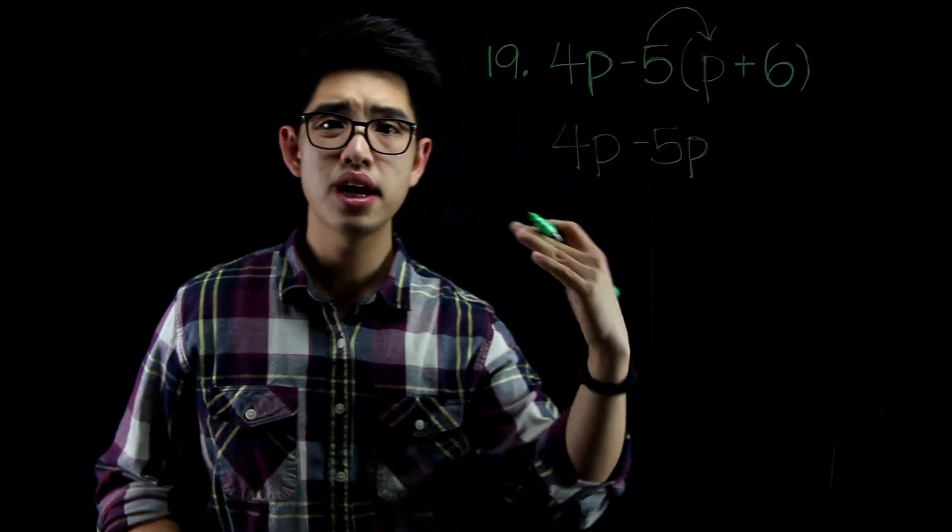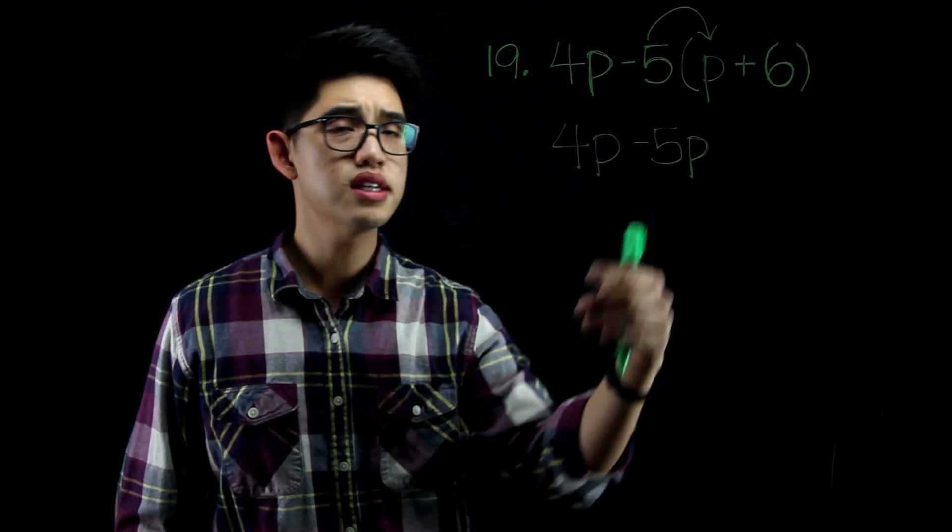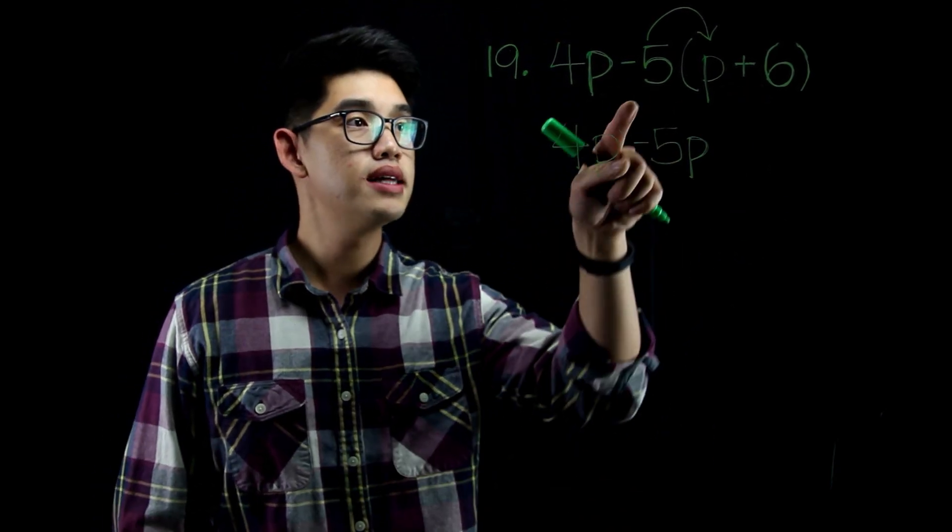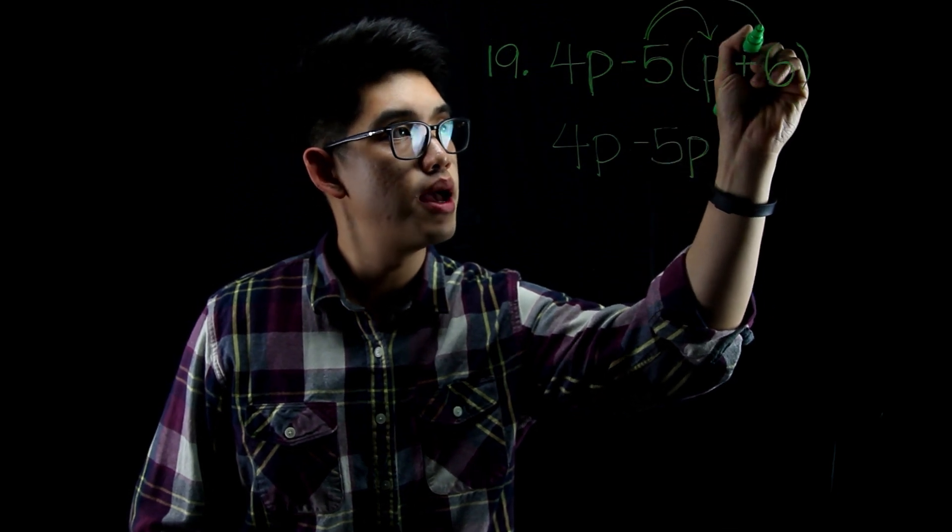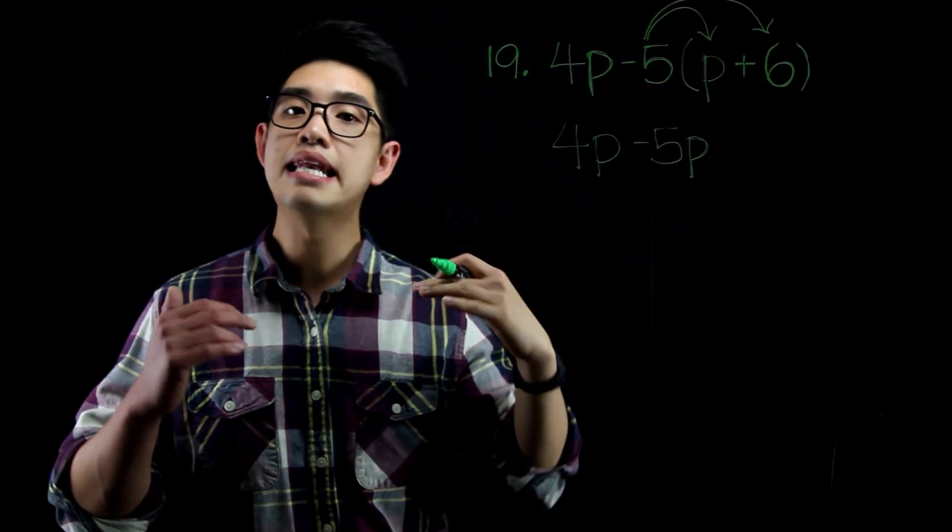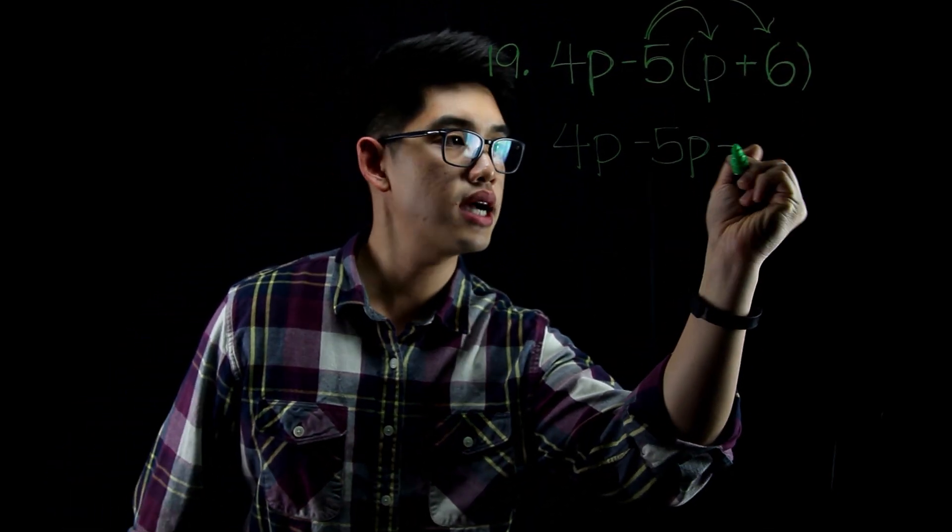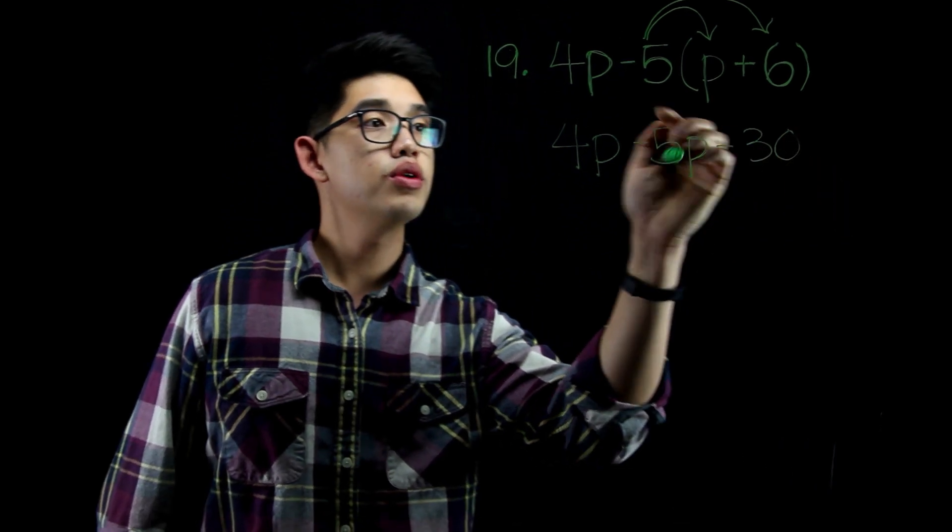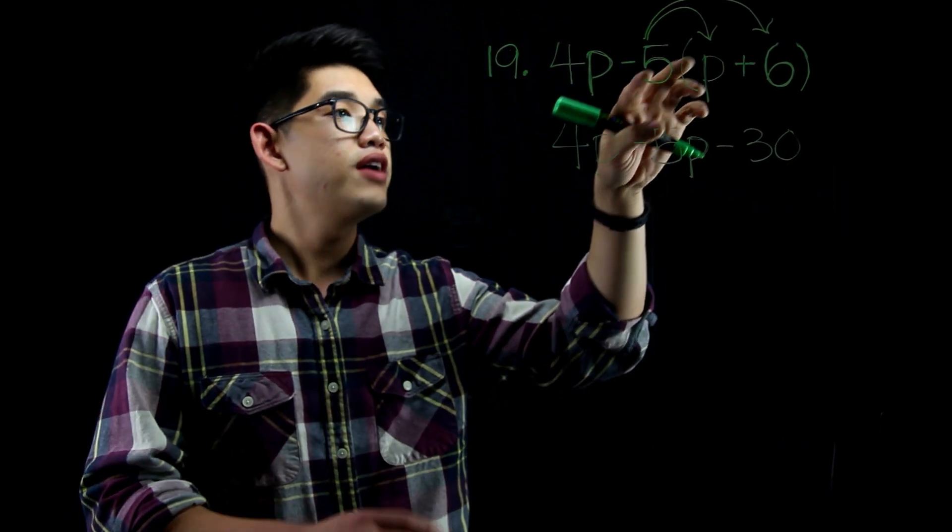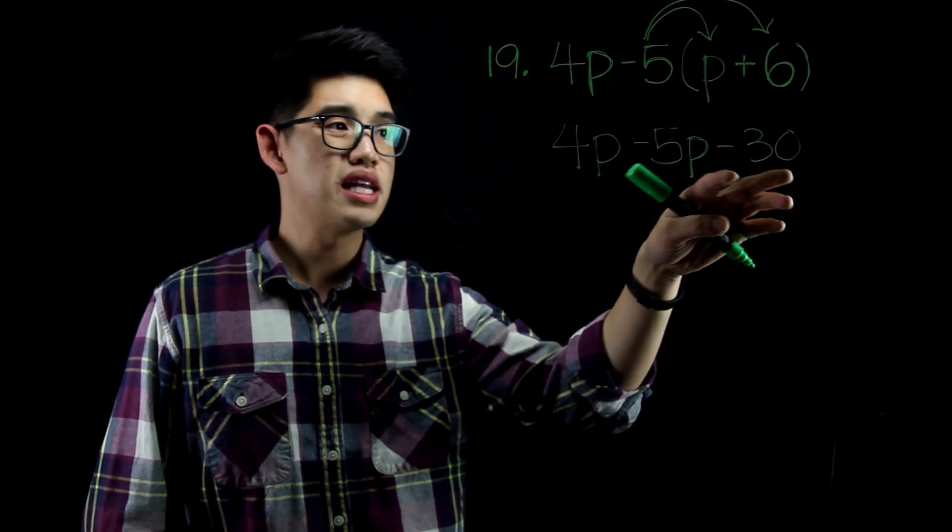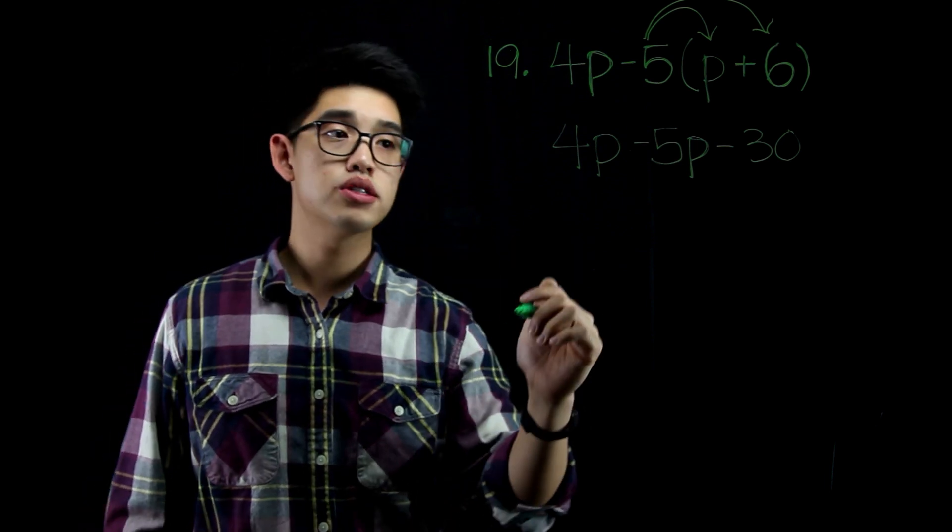And this is where a lot of students get it wrong. They go, hmm, 5 times 6, is that 30? Yes it is, but it's negative 5 times 6. So it's going to be negative 30. You're going to subtract 30. What you're really doing is you're taking away 5 times the 6, which is negative 30. Now you can combine like terms.